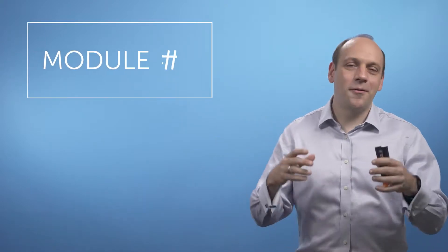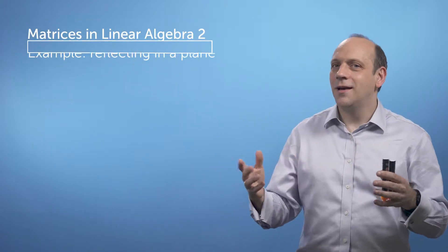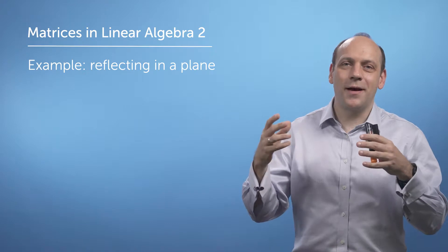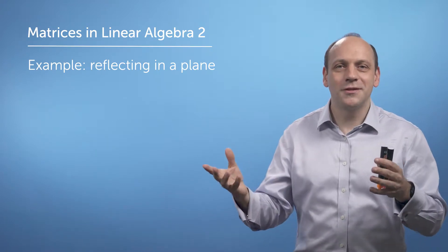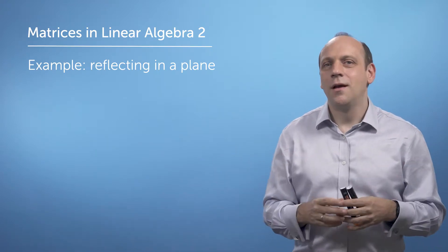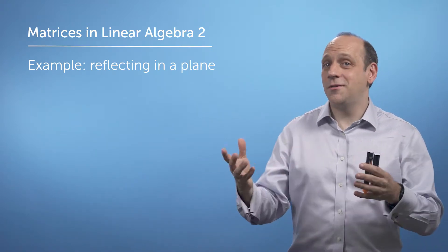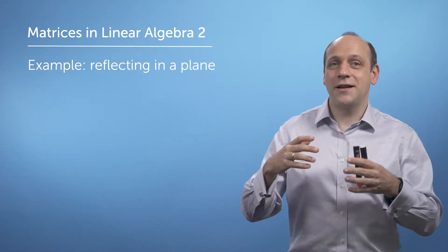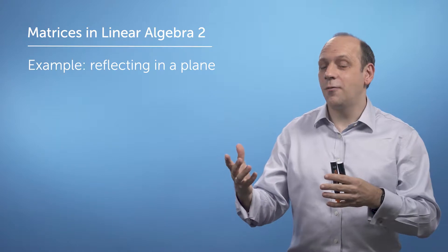Let's put all this together. Let's use our transformations knowledge and our bases knowledge in order to do something quite tricky, and see if we can make our life quite simple. What I want to do here is know what a vector looks like when I reflect it in some funny plane.